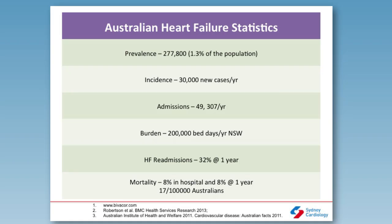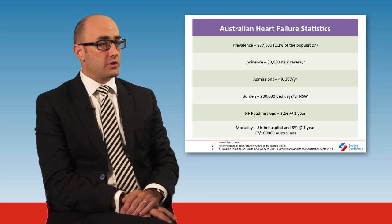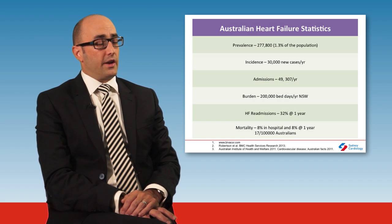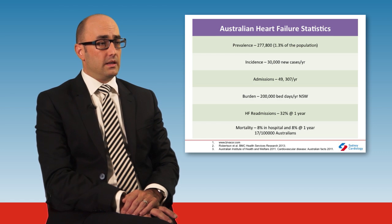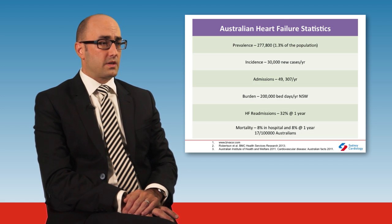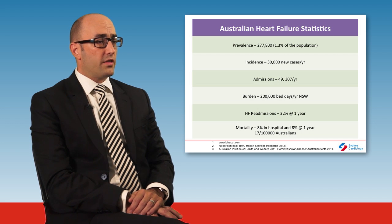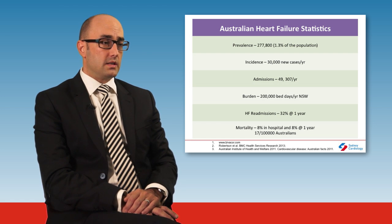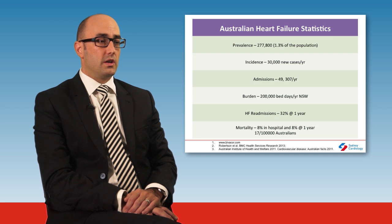We're currently on the cusp of a tsunami of heart failure. Up to 5 million patients in America are currently suffering from heart failure. 277,000 patients in Australia alone equates to 1.3% of the population — that's an incidence of 30,000 new cases per year with a burden of 200,000 bed days in NSW alone. At a cost of $1,000 per day this totals $2 million a year for the NSW government. Heart failure readmissions are high at 30% at one year, and whilst mortality has been reduced from 50% at one year in the 90s, we are still at a high level of 10% per year mortality.